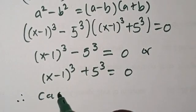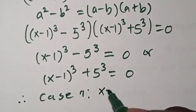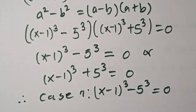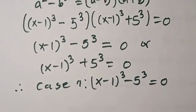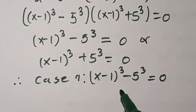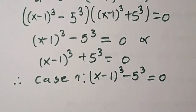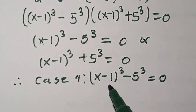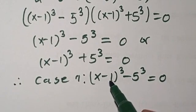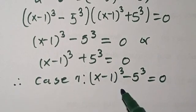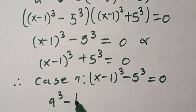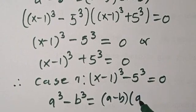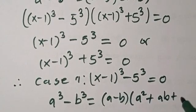So for Case 1, we have x minus 1 to the power of 3 minus 5 to the power of 3 equals 0. Now we're going to solve this completely. We need to recall that when you have a to the power of 3 minus b to the power of 3, this gives us a minus b, into bracket, a squared plus ab plus b squared.